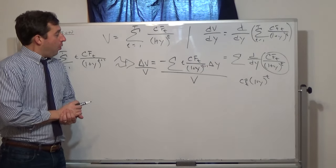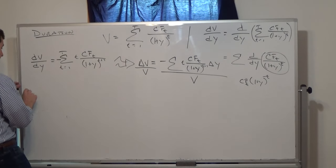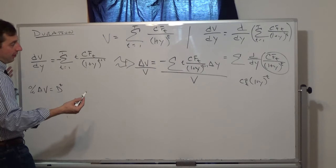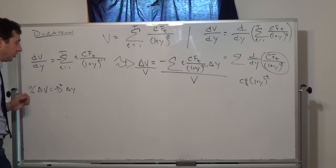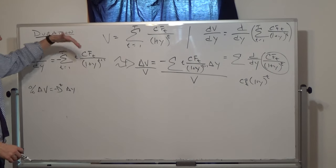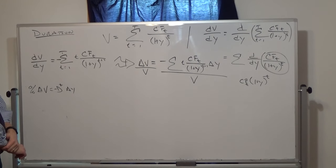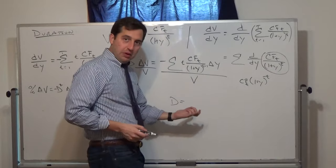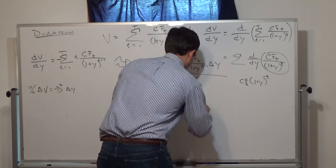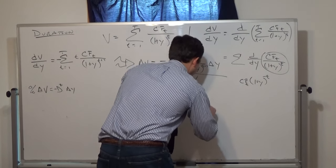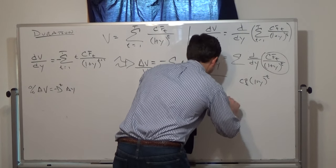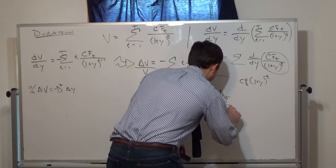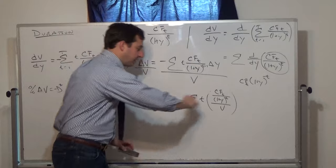Of course, this gives the change in the dollar value of the bond. Usually we want the percent change in the value of the bond, so all we have to do is divide through by V. This gives us the percent change in the value of the bond. We're going to call this D-star, and this is termed modified duration — the percent change in the value of the bond equals negative D-star times the change in y. We can also define what people often call Macaulay duration: the sum of t times the cash flow at time t divided by 1 plus y to the t-th power, all divided by V.